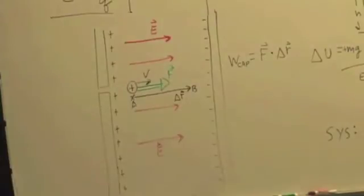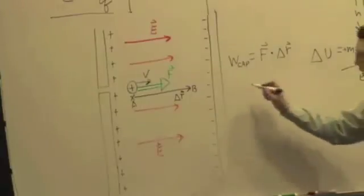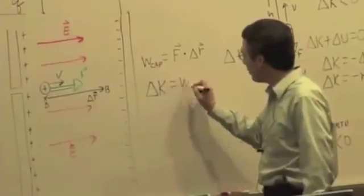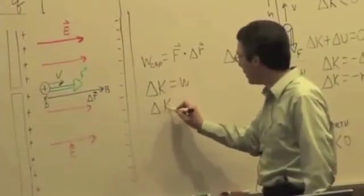So is the work positive or negative? Work is positive, right? It's pushing in the same direction as the displacement, so it's going to speed up. Delta K is equal to the work, so delta K is greater than zero.